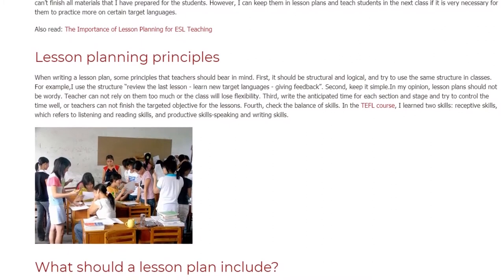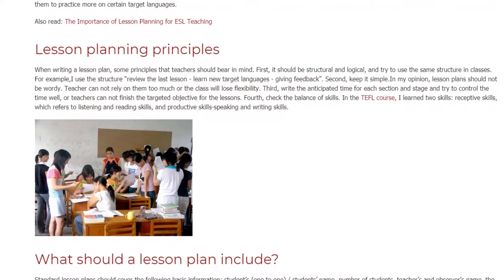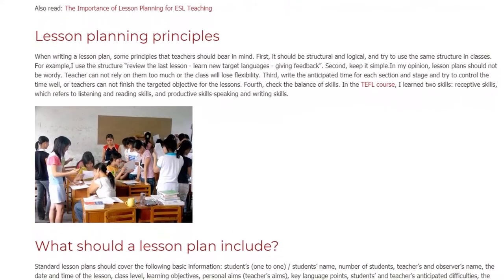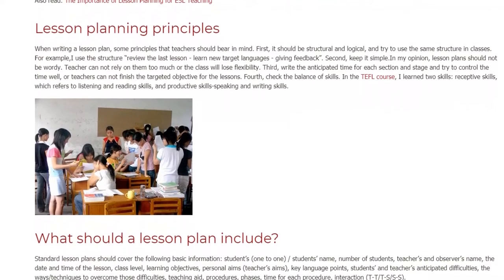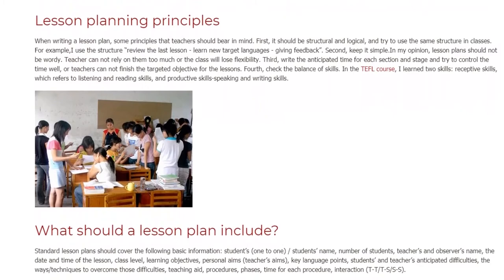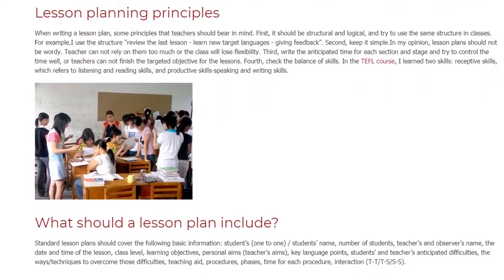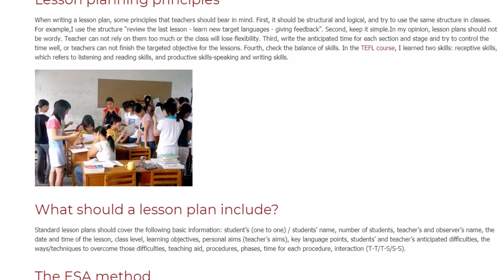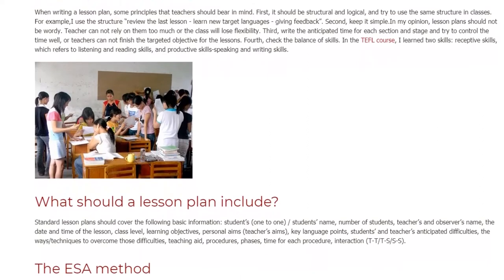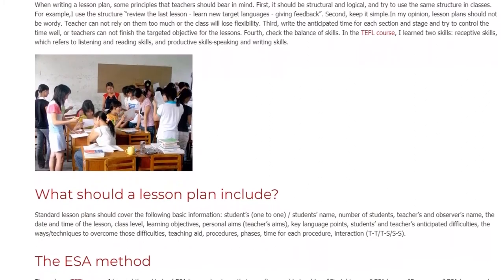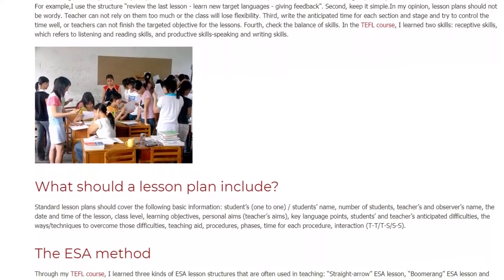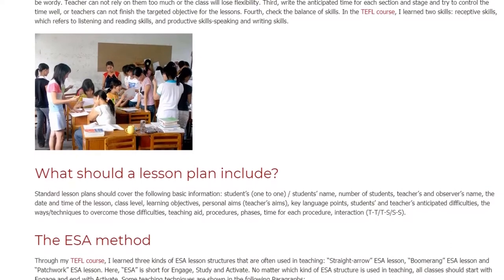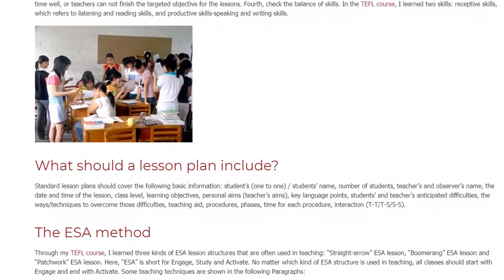What Should a Lesson Plan Include? Standard lesson plans should cover the following basic information: student type (1-to-1 or group), student's name, number of students, teacher's and observer's name, the date and time of the lesson, class level, learning objectives, personal aims, teacher's aims, key language points, students' and teacher's anticipated difficulties, the ways and techniques to overcome those difficulties, teaching aids, procedures and phases, time for each procedure, and interaction patterns such as TT, TS, or SS.